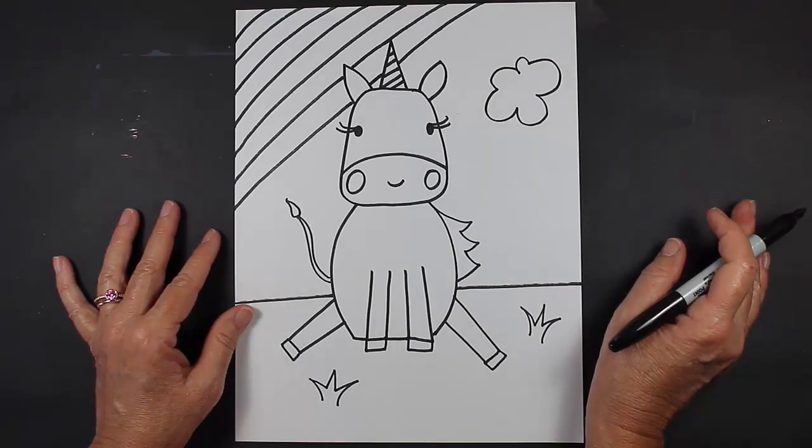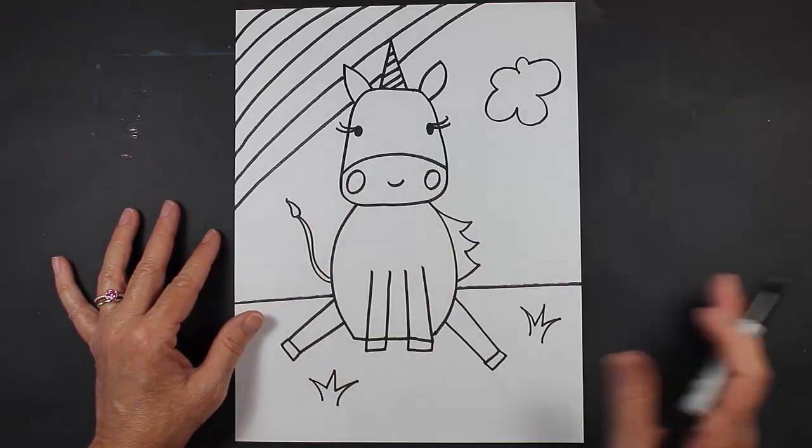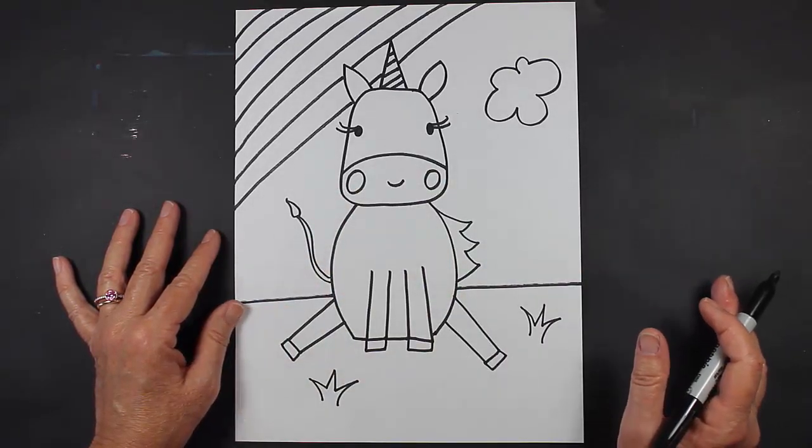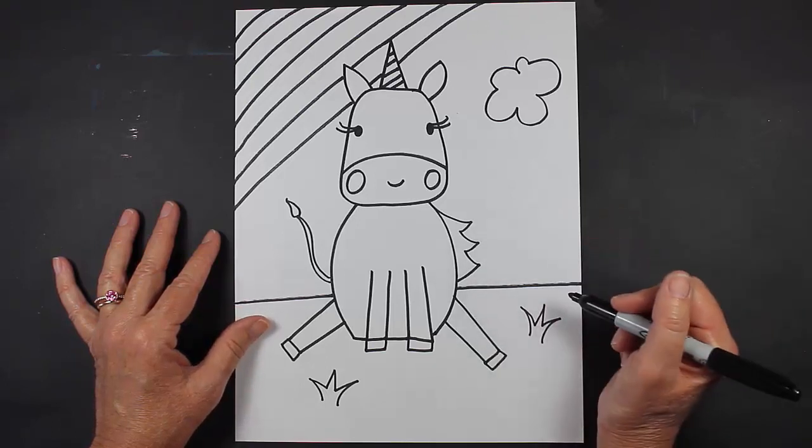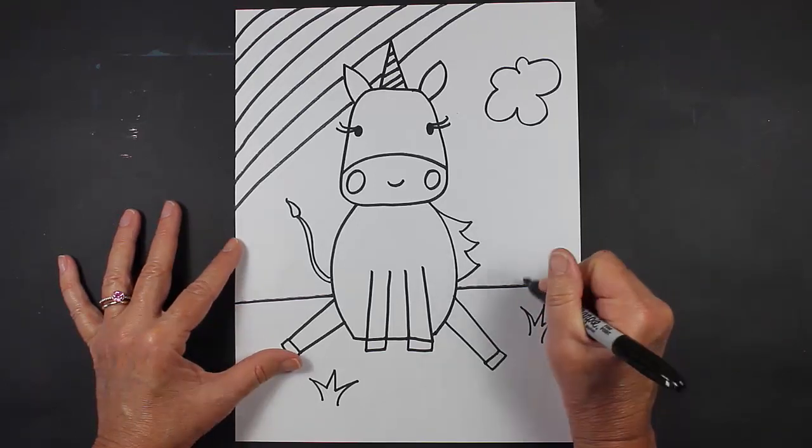And then if you see anything else on your piece of paper that you would like to fill up with more drawings, you can go ahead and do that. Now actually, I think I want to put something right here—I think I'm going to put a small flower.